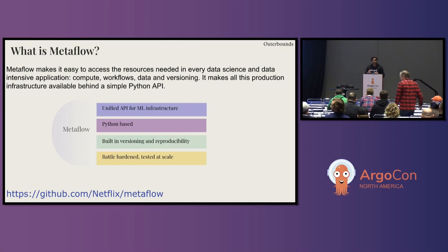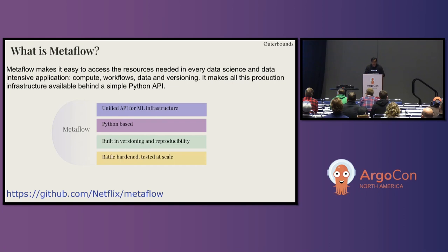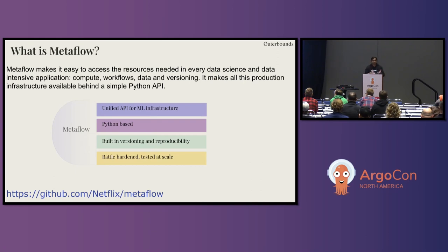Before we go into the details of what cross-cluster Argo workflows and cross-cluster Argo events means, let's take a quick look at what Metaflow is. Metaflow is an open source project that makes it easy to access resources needed for every data science and data-intensive application — compute workflows, data, and versioning — using simple Python APIs. You can find it at github.com/netflix/metaflow. Netflix is where the open source project began, and now multiple companies contribute towards it, Outerbounds being one of the main ones.